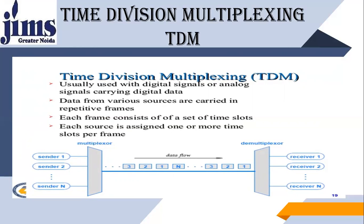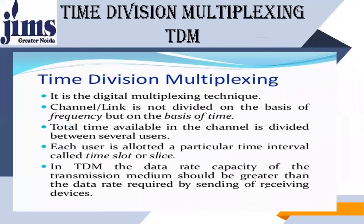You need not divide the bandwidth for each user. This is the demultiplexer, which separates these frames with respect to receiver one, two, three, and so on. TDM is a digital multiplexing technique where channels are not divided on the basis of frequency but on the basis of time. Each frame has its time, and this cycle is continuous. The total time available in the channel is divided between several users, each allowed a particular time interval or time slot.